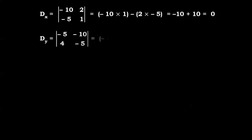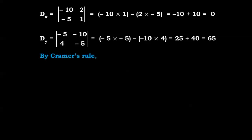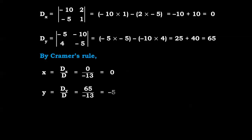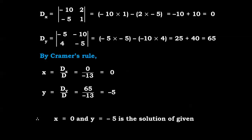For Dy: a1=−5, c1=−10, a2=4, c2=−5. So Dy = (−5)(−5) − (−10)(4) = 25 + 40 = 65. But wait — with D = −13: by Cramer's Rule x = Dx/D = 0/(−13) = 0, and y = Dy/D = −65/13 = −5. Therefore x = 0 and y = −5 is the solution.